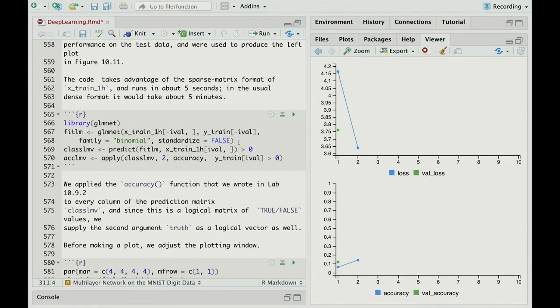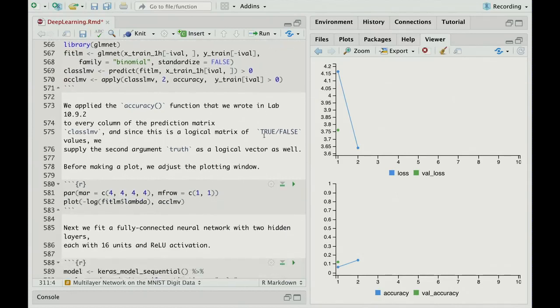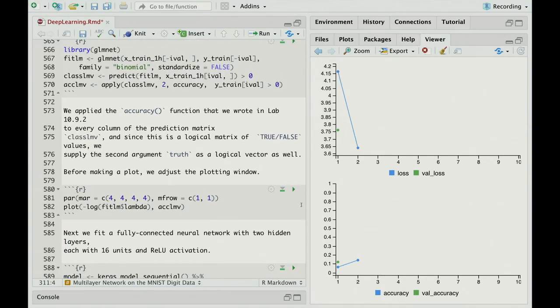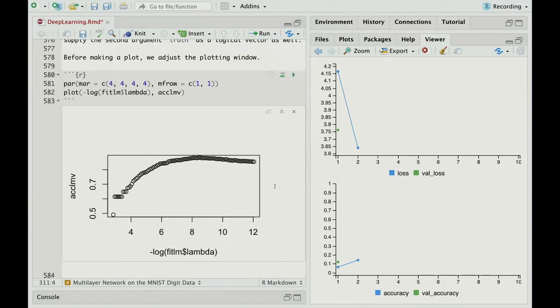So there's a call to Glimnet. We tell it to use a binomial because the response, remember, is the sentiment of the document. And it was, what was it? Favorable or unfavorable? Yeah. Yeah. And we tell it not to standardize the matrix because the features are all binary. So they're all in the same units. Then we predict on the test data, or in this case, the validation data, and we compute the accuracy. So let's get that running. And it's done. And in this case, we just make a plot of the results. And we see the performance on the validation data. And it gets up to about 88%.